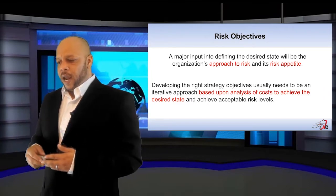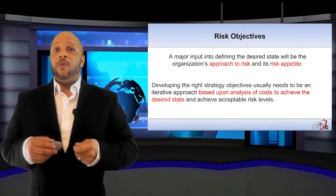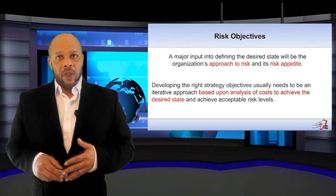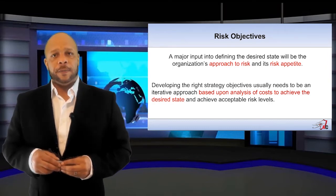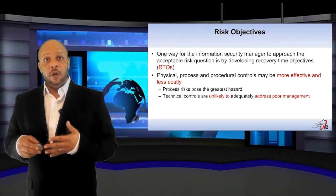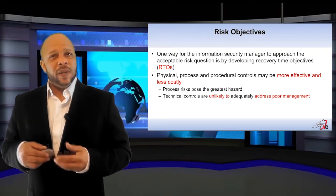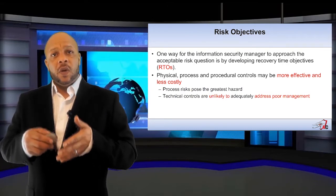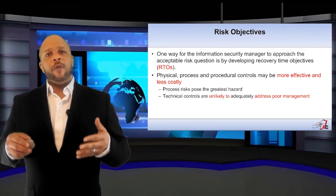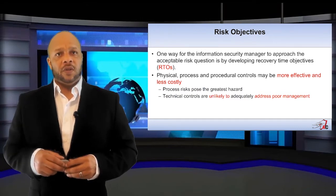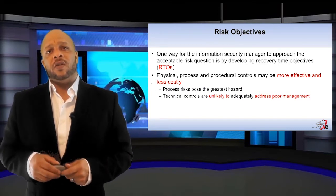Now that we've defined our desired state, we need to look at our risk objectives. A major input in defining the desired state is the organization's approach to risk, or their risk appetite, which should be based on an analysis of cost to achieve the defined desired state. One way a security manager can approach the acceptable risk question is by developing RTOs, or recovery time objectives. However, it is more effective and less costly to look at physical, process, and procedural controls to identify the organization's risk appetite. Remember, faulty processes pose the greatest hazard — technical controls are unlikely to address poor management, which is why we want to look at process risks first.